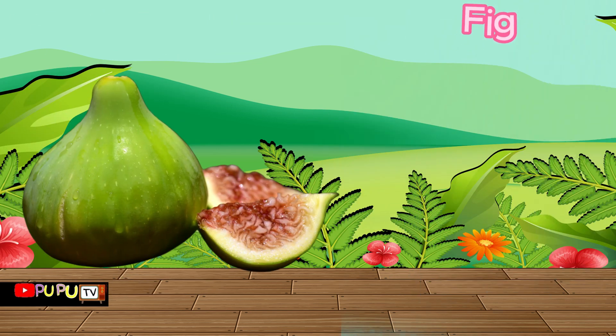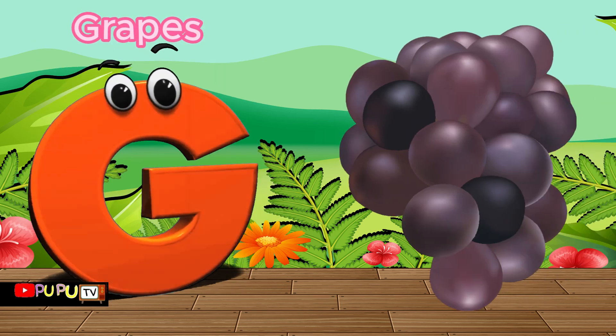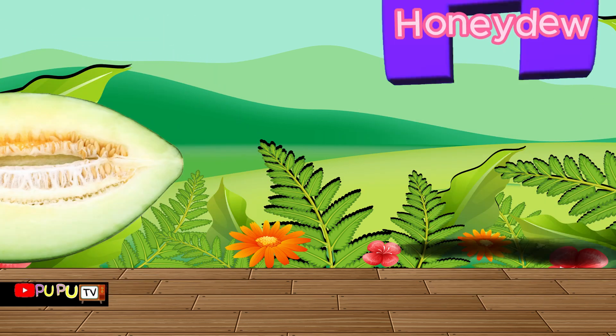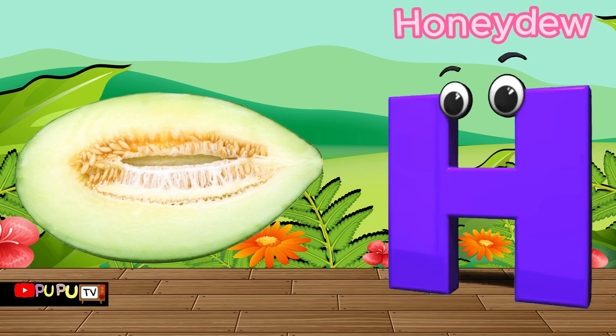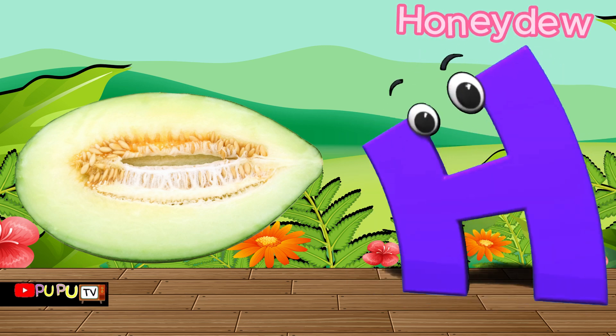G is for grapes, g-g-grapes. H is for honeydew, ha-ha-honeydew.